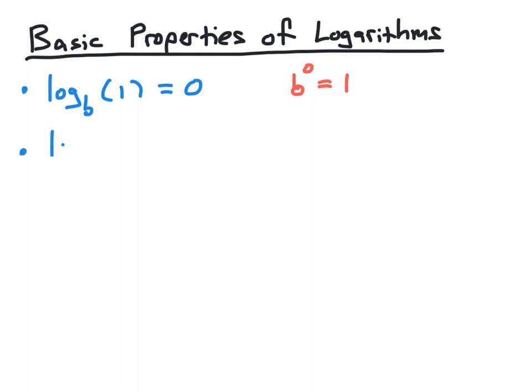Similarly, log base b of b is going to equal 1. If we translate this to exponential form, we see that this translates to the statement that b to the first power equals b. This is certainly true in exponential form, and therefore the corresponding log property, log base b of b equals 1, is also true.